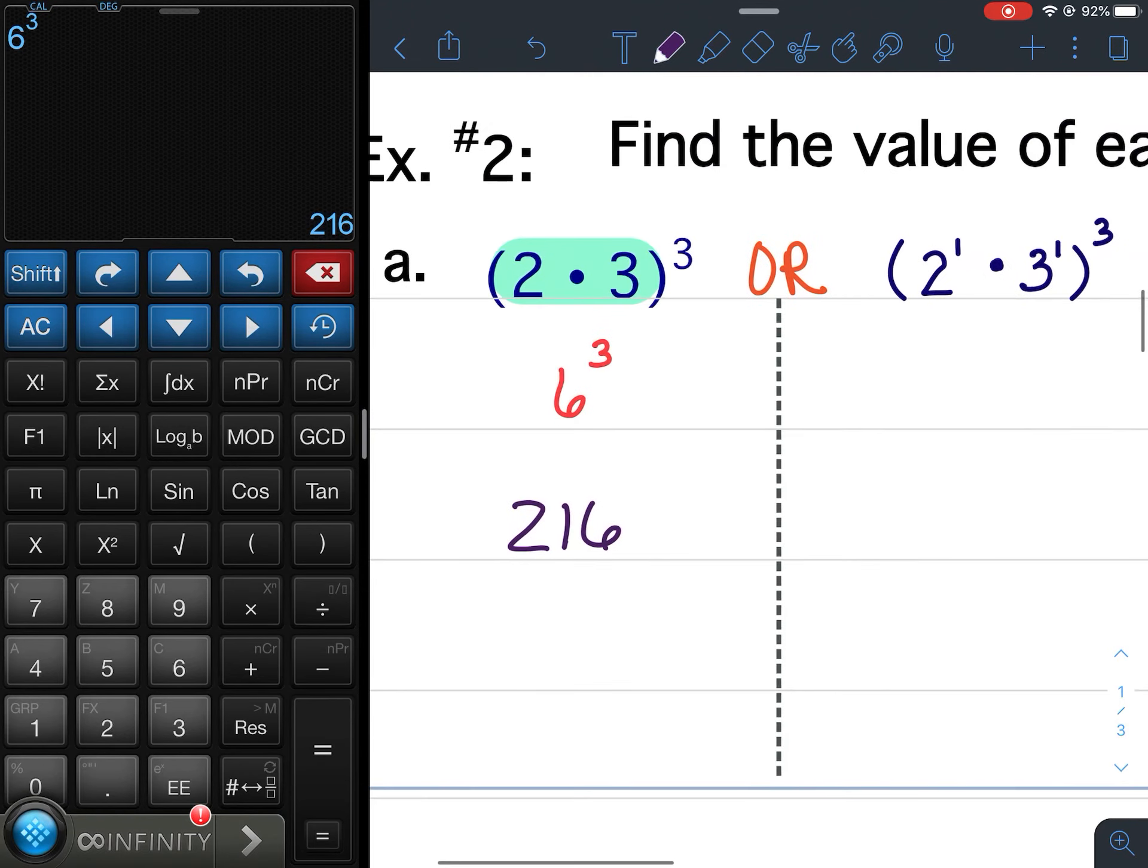So that's the normal way you would do it. Obviously follow the order of operations, 2 times 3 is easy, and then you'd raise it to the outside power.